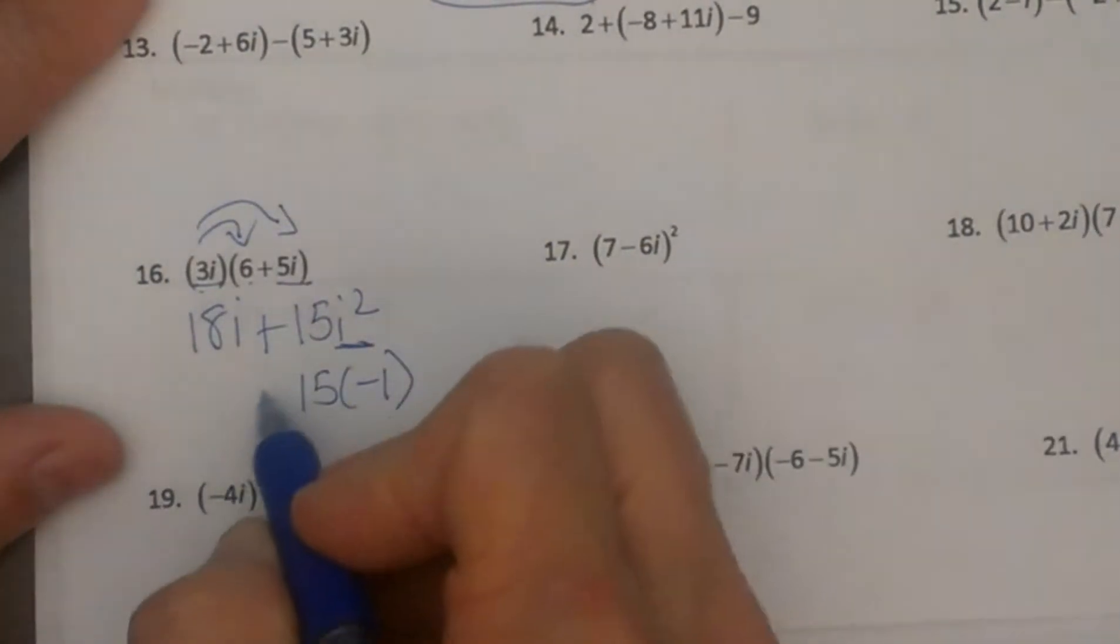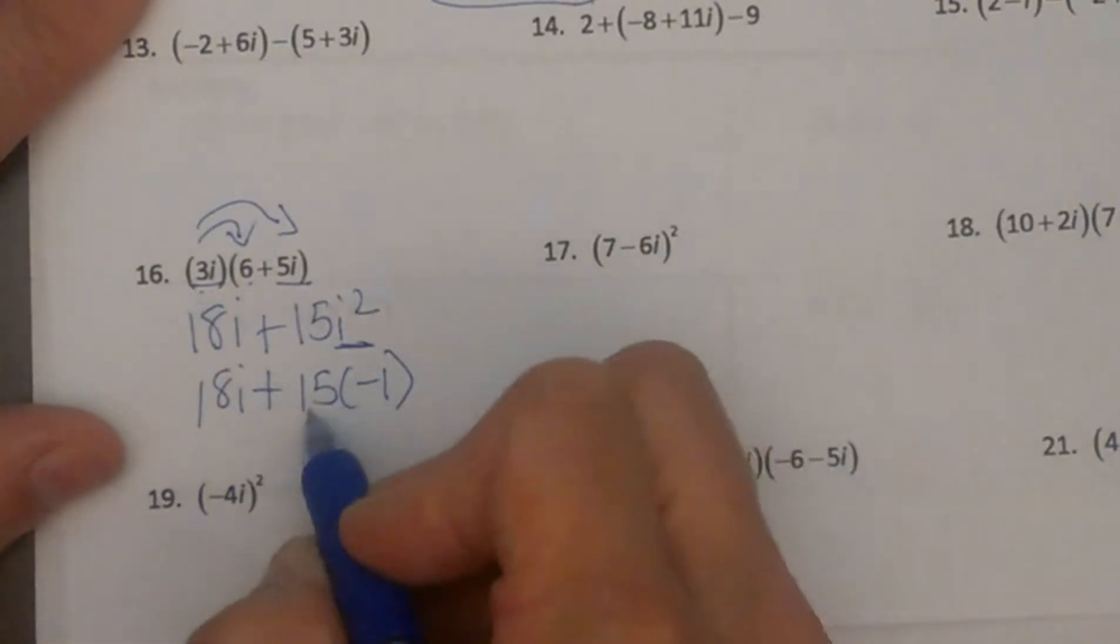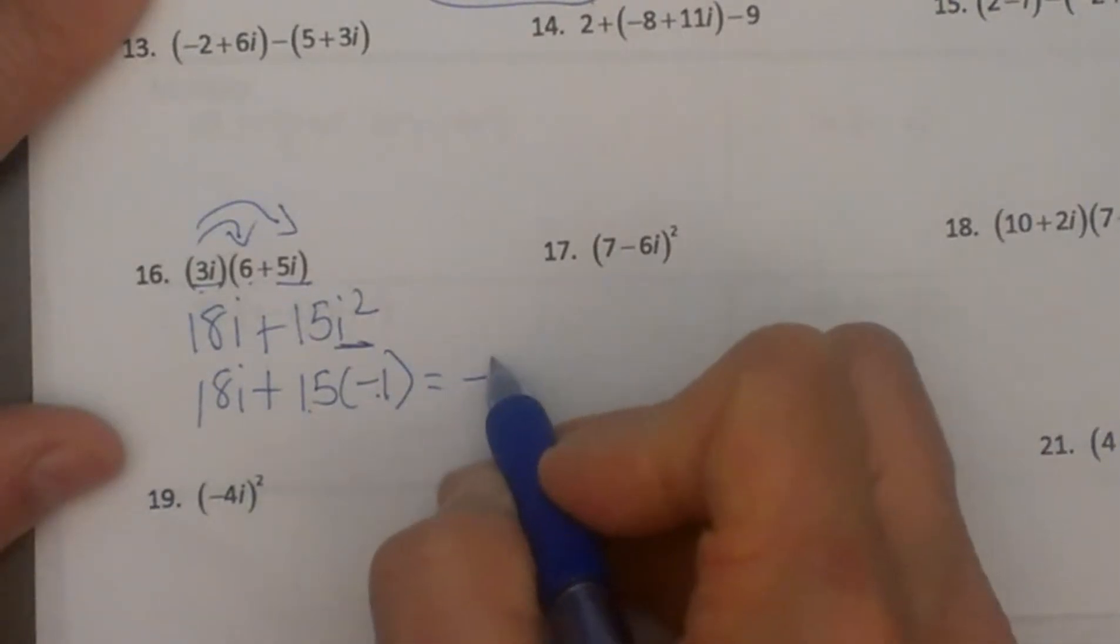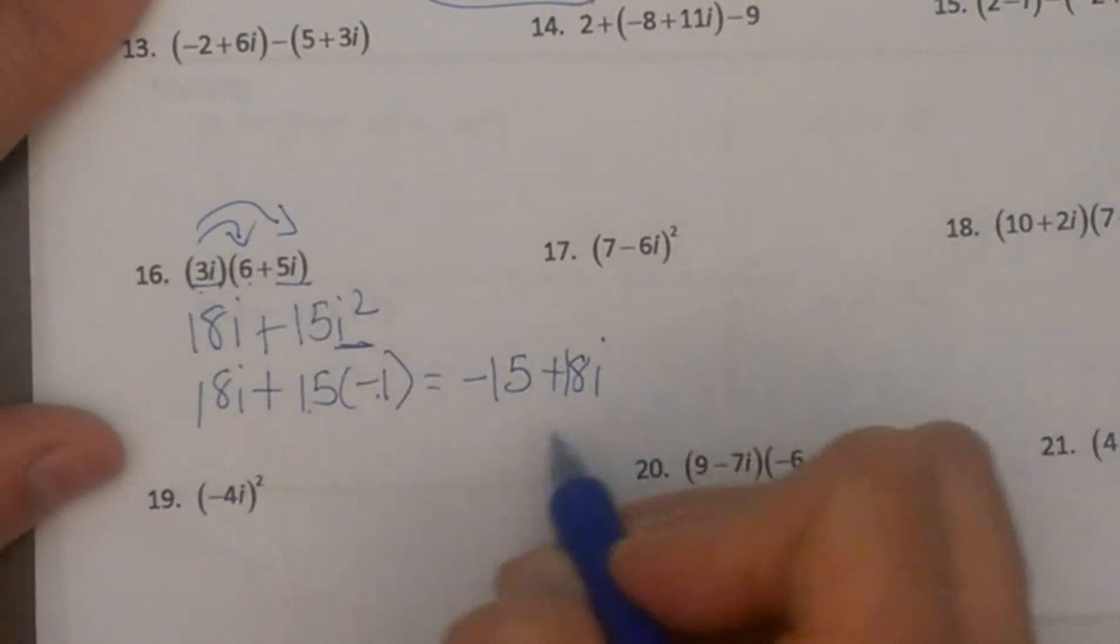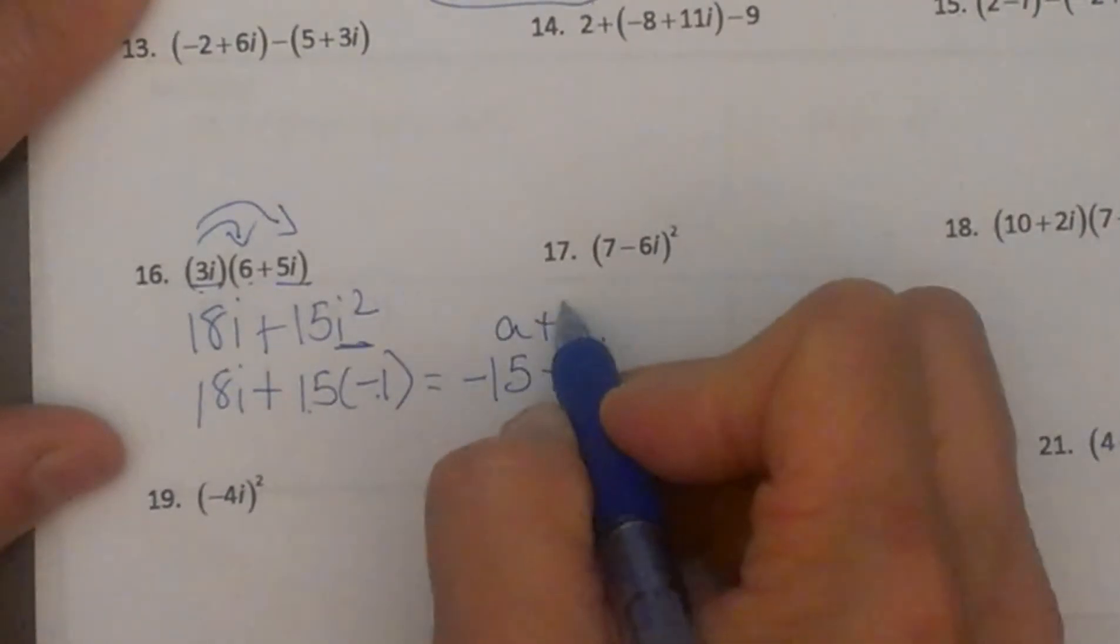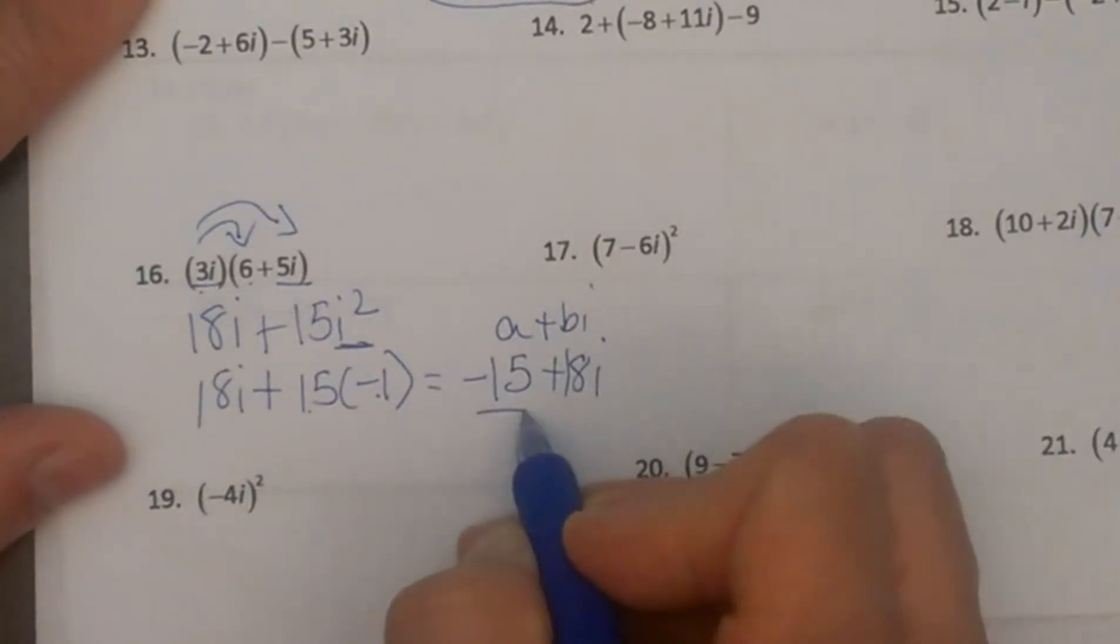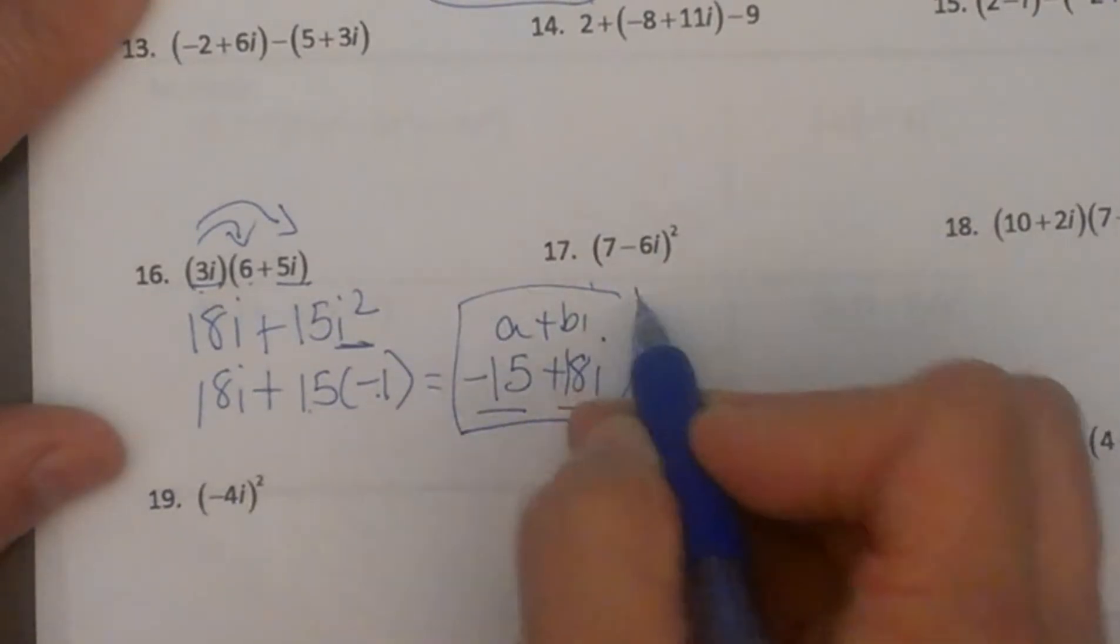So I have 18i plus 15 times negative 1. Now let's multiply that together. That gives me negative 15 plus 18i. And you always want to write this in the a plus bi form where you have the real part followed by the imaginary part. So there is your answer.